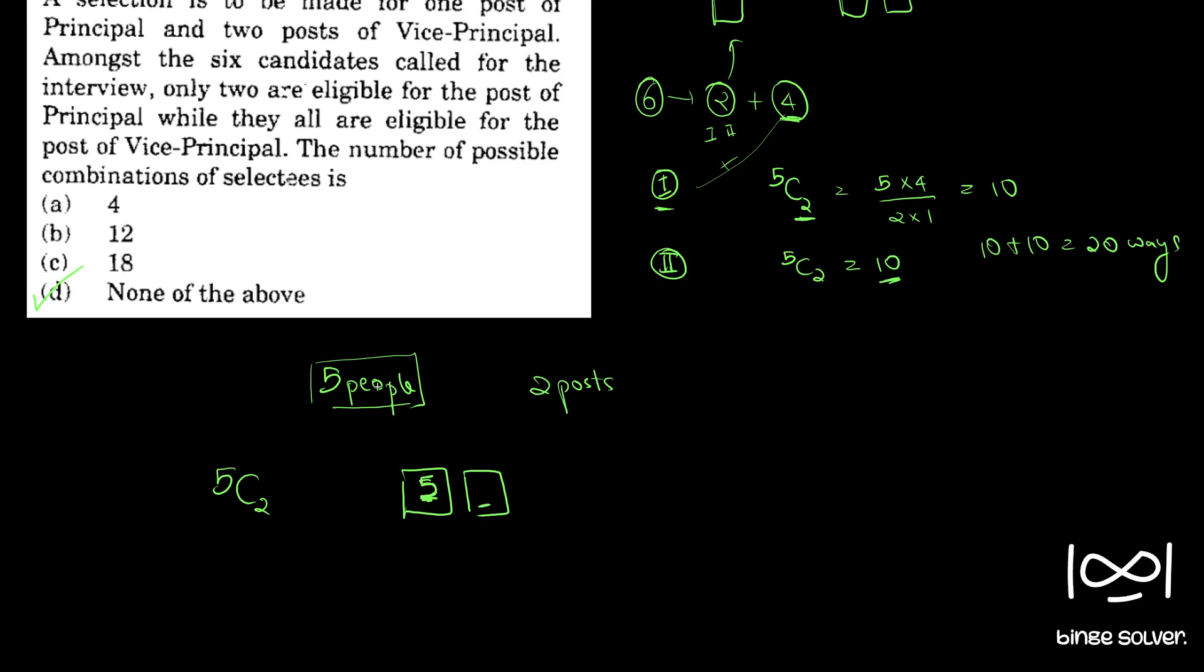And now we have to fill in this post. Now what we are left with is 4 choices. So in total we could have chosen 5 different people for this post, and once that person is selected we are left with 4 people. So in total we have 20 combinations.